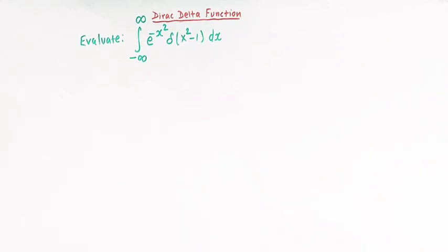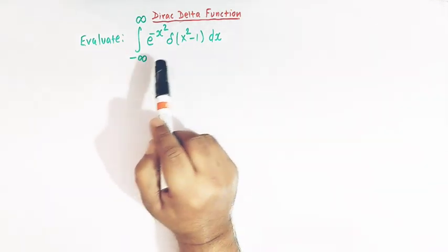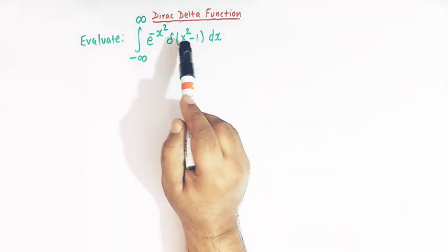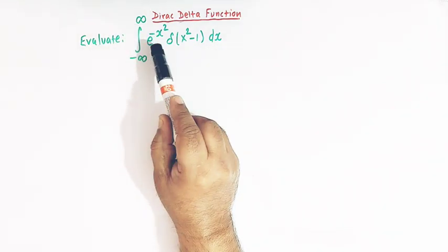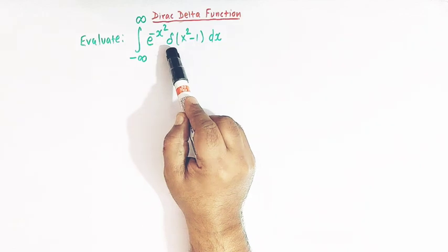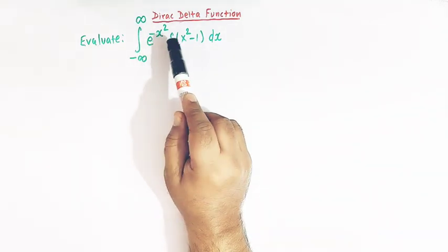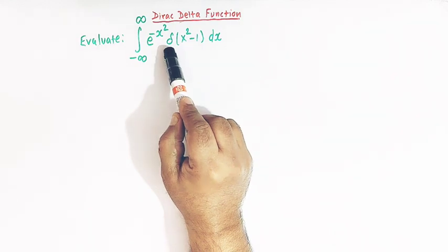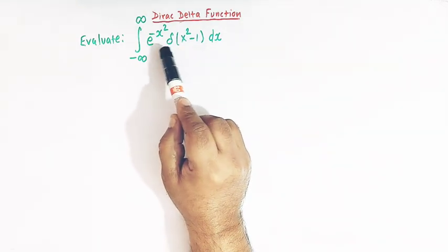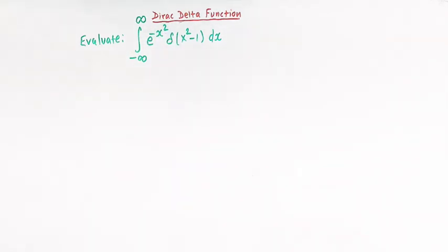Hello viewers! In today's class, we are going to discuss one important problem from the Dirac delta function. In our earlier videos, we have already discussed a lot about the Dirac delta function. So in this class, we'll evaluate this integral involving the Dirac delta function: the integral from minus infinity to infinity of e raised to minus x square, delta of x square minus 1, dx.